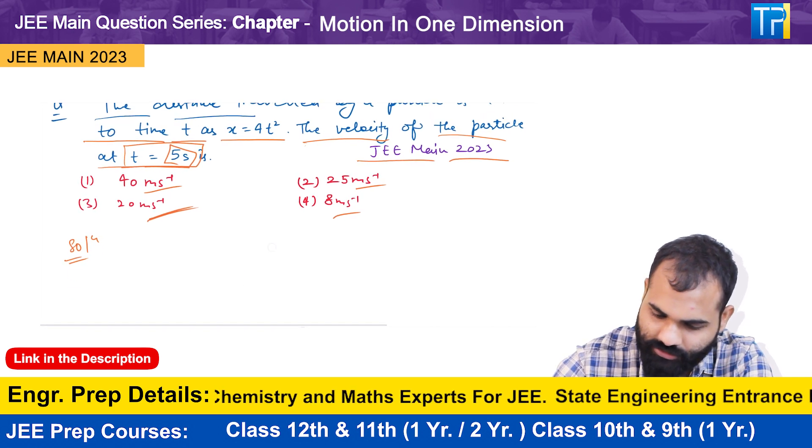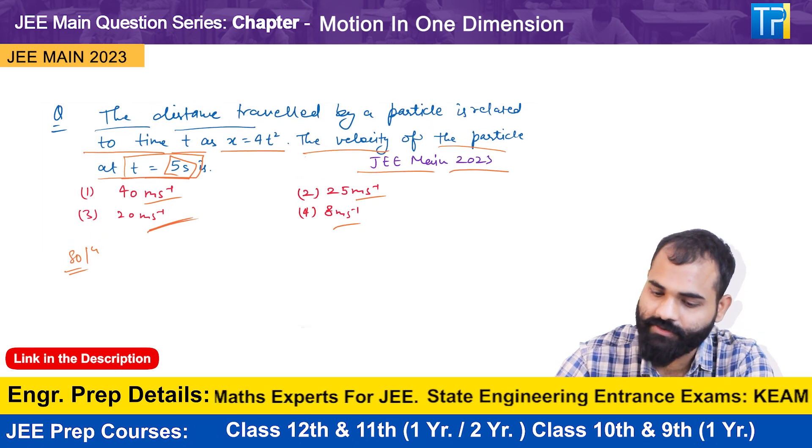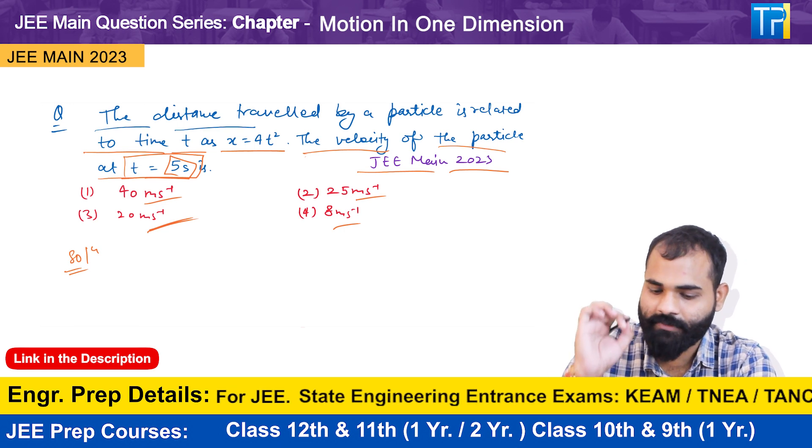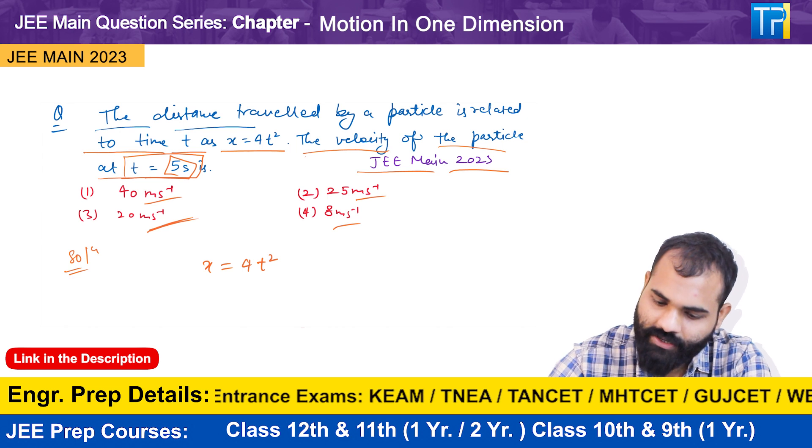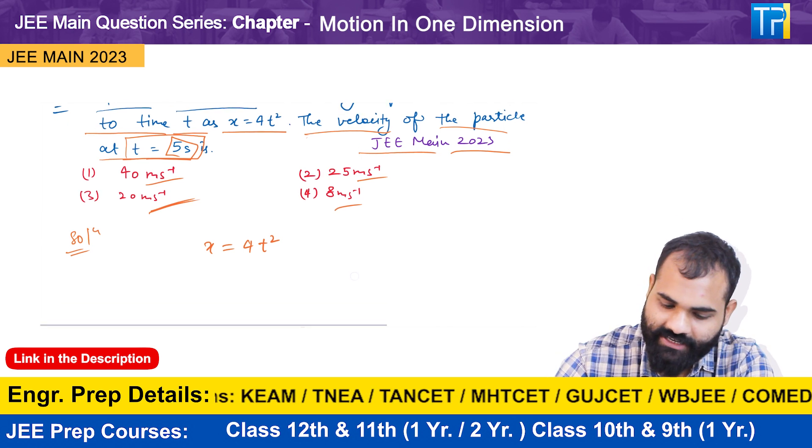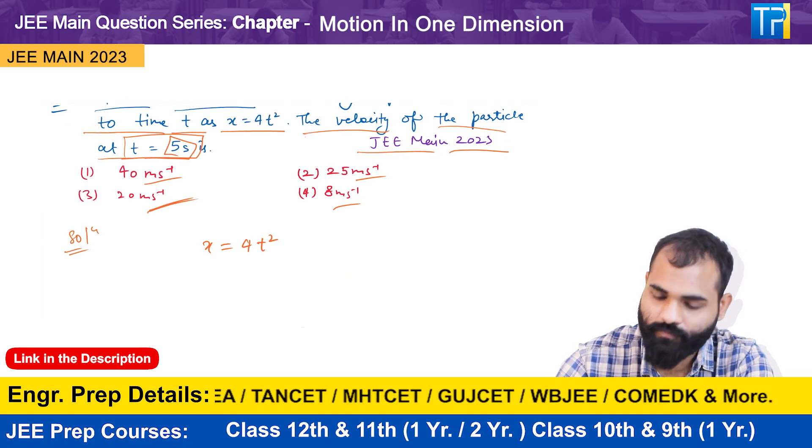So according to the question, the distance travelled by a particle is related to time t as x equals 4t square. The velocity of the particle at time t equals 5 seconds.